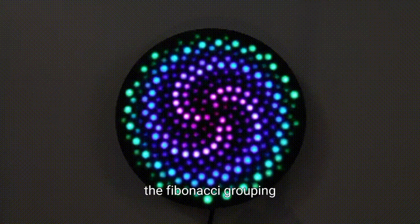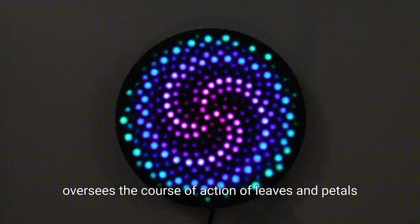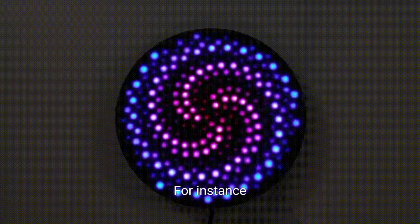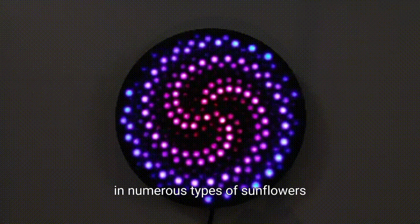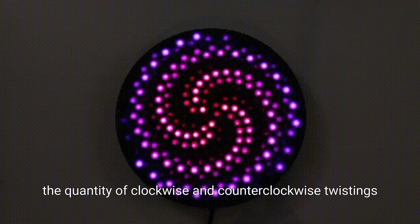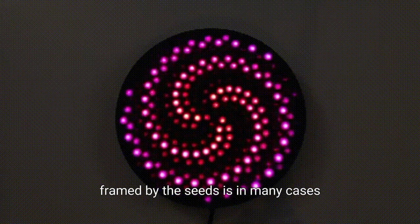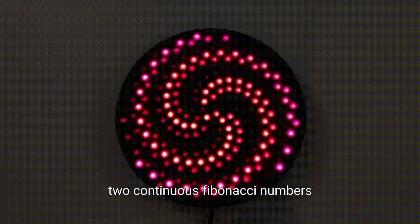In plants, the Fibonacci grouping oversees the course of action of leaves and petals. For instance, in numerous types of sunflowers, the quantity of clockwise and counterclockwise twistings framed by the seeds is in many cases two continuous Fibonacci numbers.